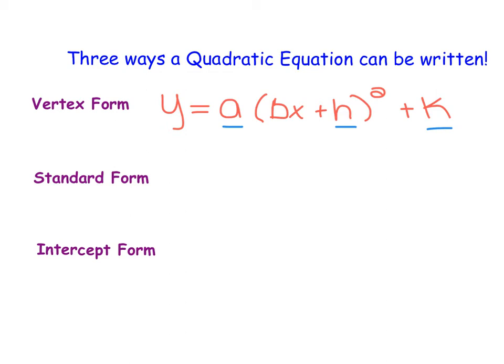Then the second form that you've seen before back in algebra 1 is called standard form, and that's typically written as y = ax² + bx + c.